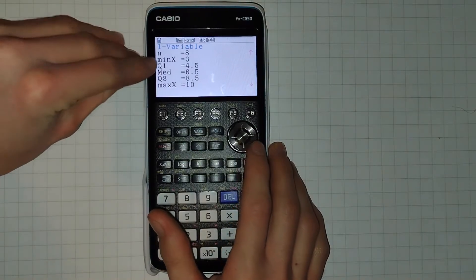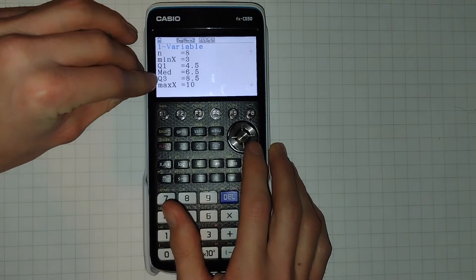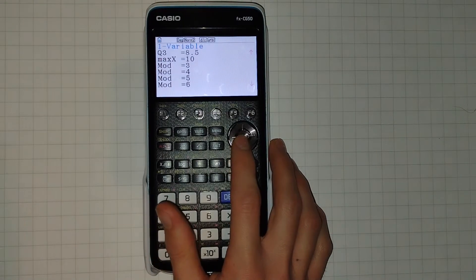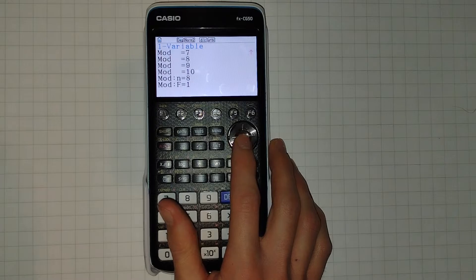Scrolling down, we can see we've got our first quartile, median and second quartile, so lower quartile and upper quartile, and plenty of other data as well.